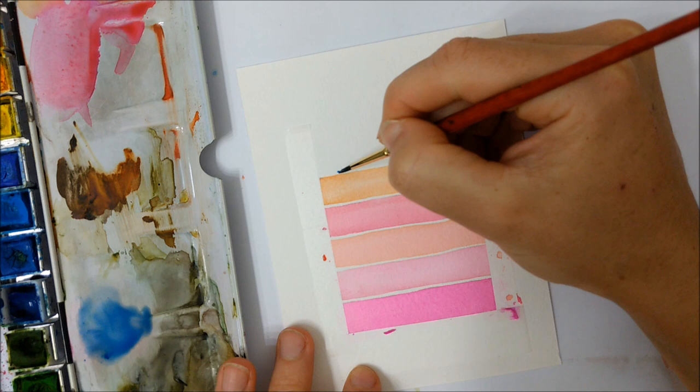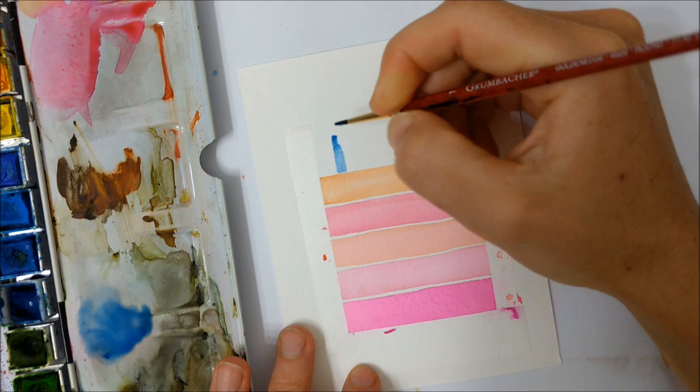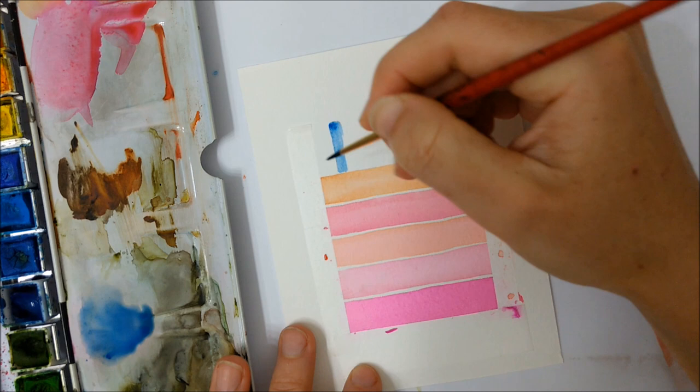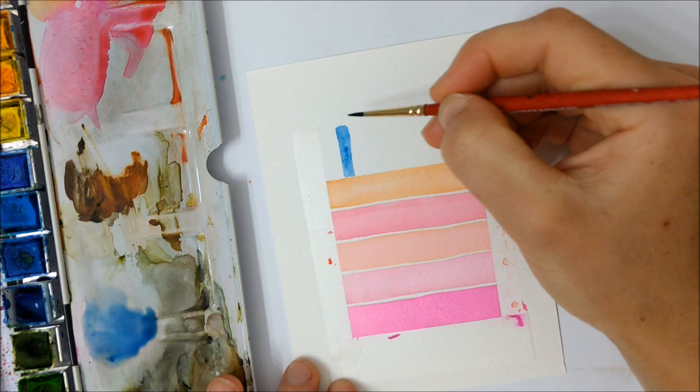Once you're happy with your layers and they have completely dried, you want to go ahead and take some different colors. You're going to be using all the colors of the rainbow—at least that's the way that I painted my candles—and that's what you're going to be painting next: the candles on the birthday cake.